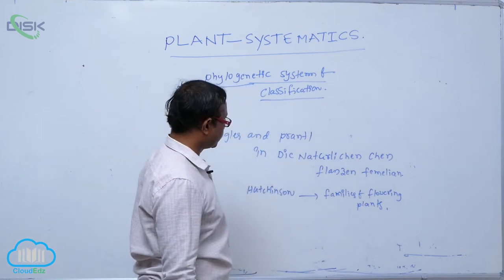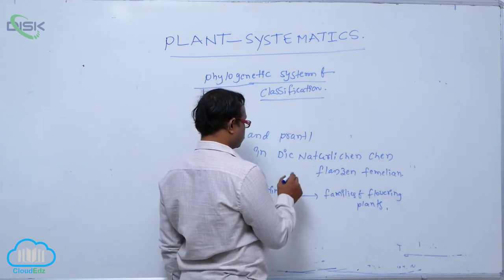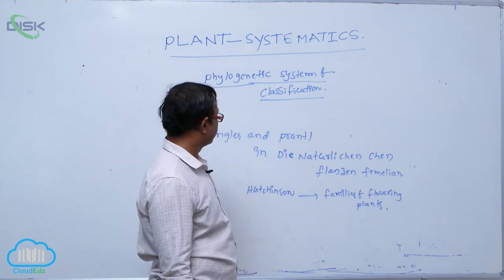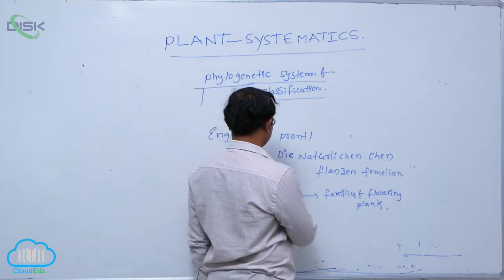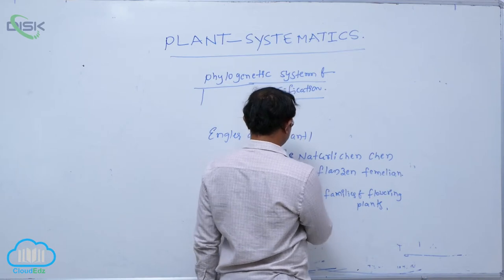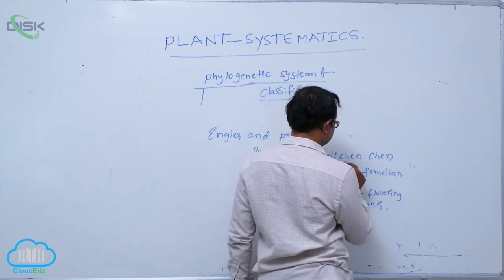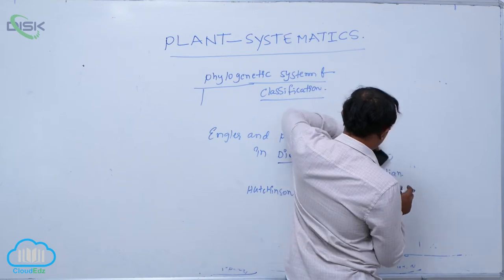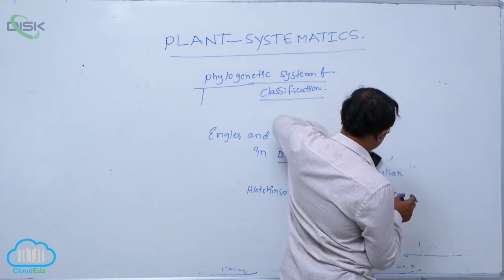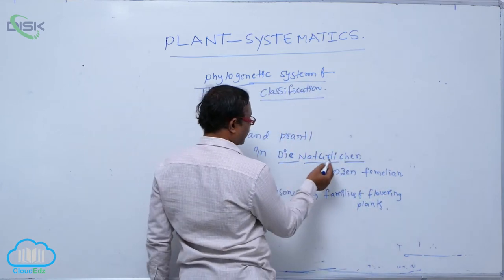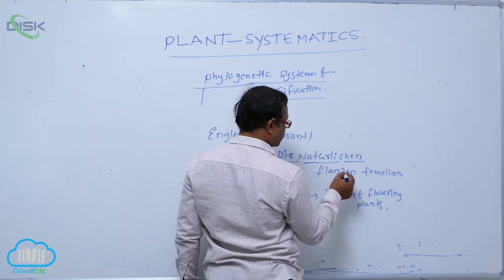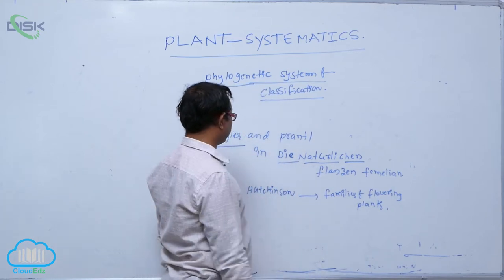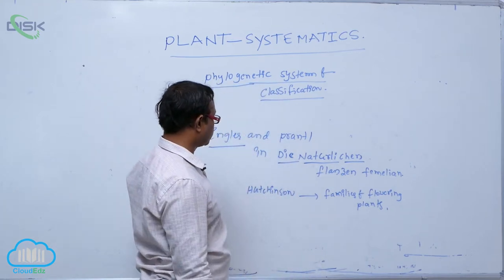Engler and Prantl were the scientists who for the first time explained the phylogenetic system of classification in their book 'Die Natürlichen Pflanzenfamilien', published by Engler and Prantl.